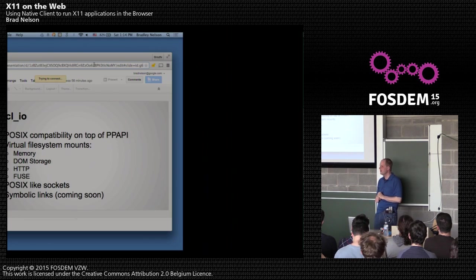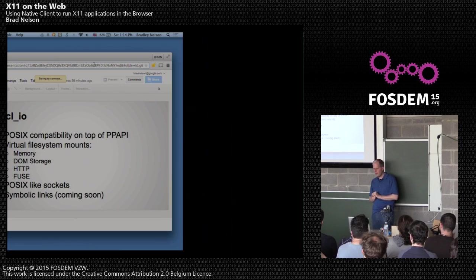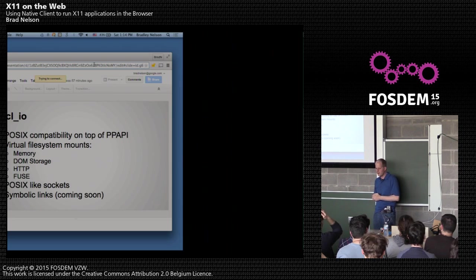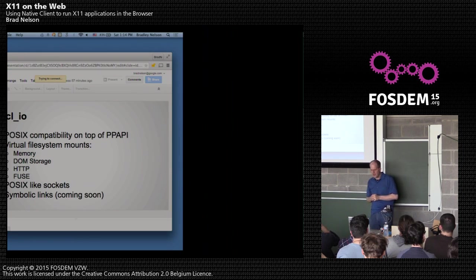In order to have POSIX compatibility, we had to do a little work to build this back up on top of Pepper. In a kind of Plan 9-like way, we implemented a bunch of virtual file systems that sit on top of Pepper. We have some very basic ones like a memory file system, and also ones stored in DOM storage and HTTP. There's a FUSE mount, and we emulate other things like sockets.